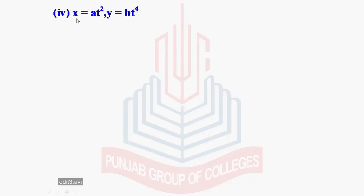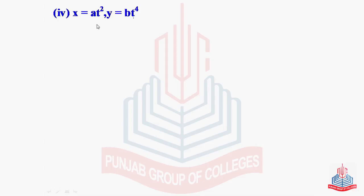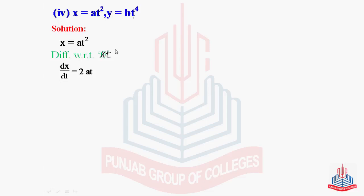The next part 4: the given expression is x equal to at² and y equal to bt⁴, which is actually a parametric function. To find the second derivative, we have to differentiate both of these two terms separately, and then using the chain rule we find y1 or the first derivative. Then to find y2 we differentiate again with respect to x. So x equal to at² — differentiate with respect to t, as x is the function of t.